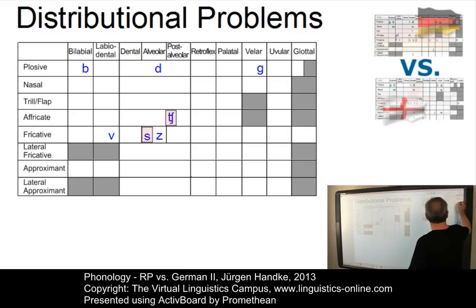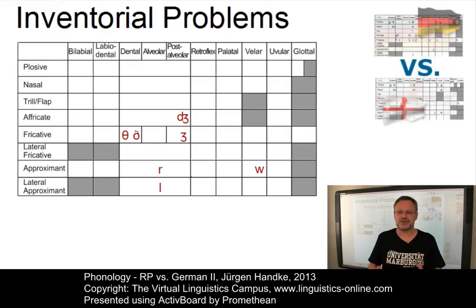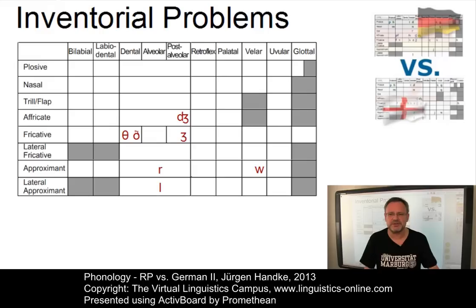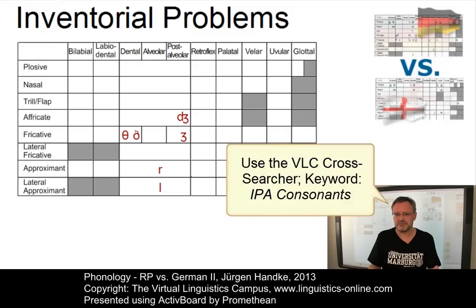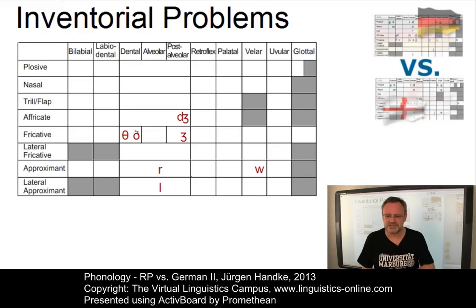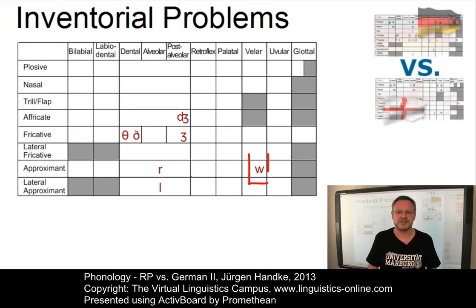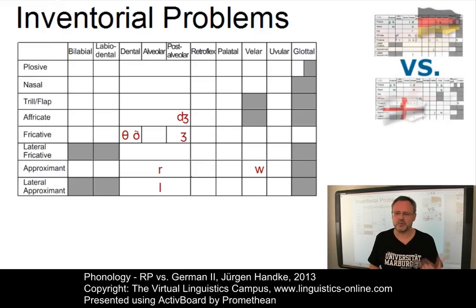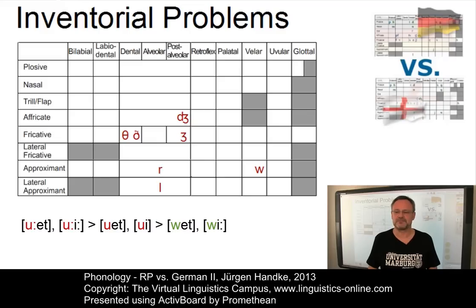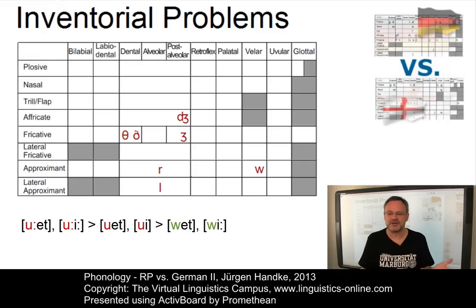The following phonemes do not exist in German and may thus be difficult for German learners of RP. The main way of teaching these phonemes is by pointing out the exact articulation of their allophones by means of diagrams and animations — for example, by typing IPA consonants into the VLC cross-searcher. In some cases, it may be helpful to refer to similar articulations. The labiovelar approximant W, for example, can easily be taught via U replacement: in words like WET or WE, learners may first start with UET and UE, then gradually make the initial U shorter until the result is the RP realization of W.